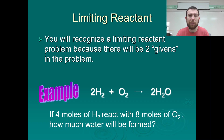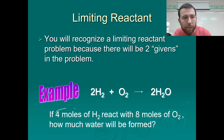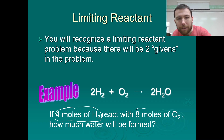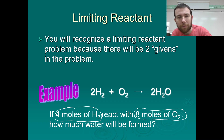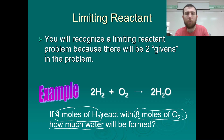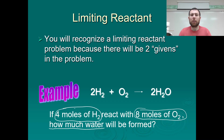For example, with the reaction 2H₂ + O₂ → 2H₂O: if 4 moles of hydrogen react with 8 moles of oxygen, how much water will be formed? Right off the bat we notice we have two givens — 4 moles of hydrogen and 8 moles of oxygen. We need to figure out which reactant is consumed first, because that determines how much water we can make.